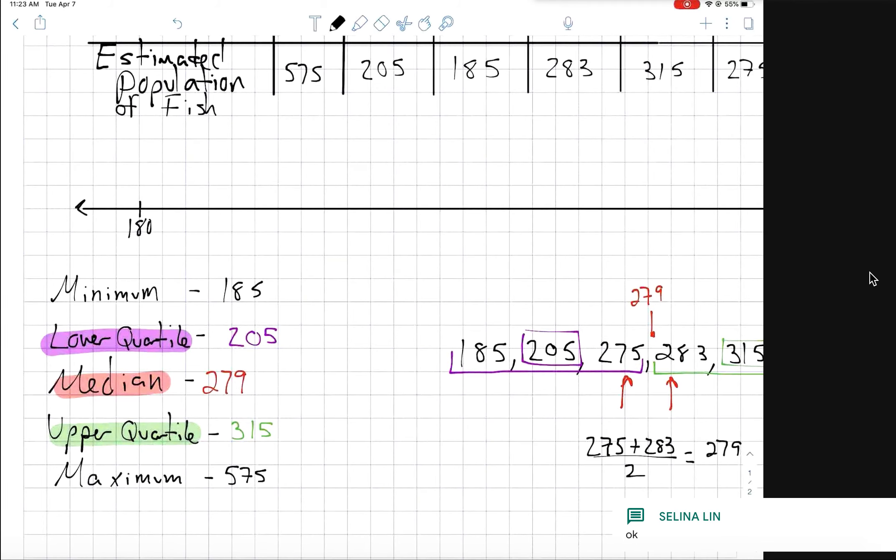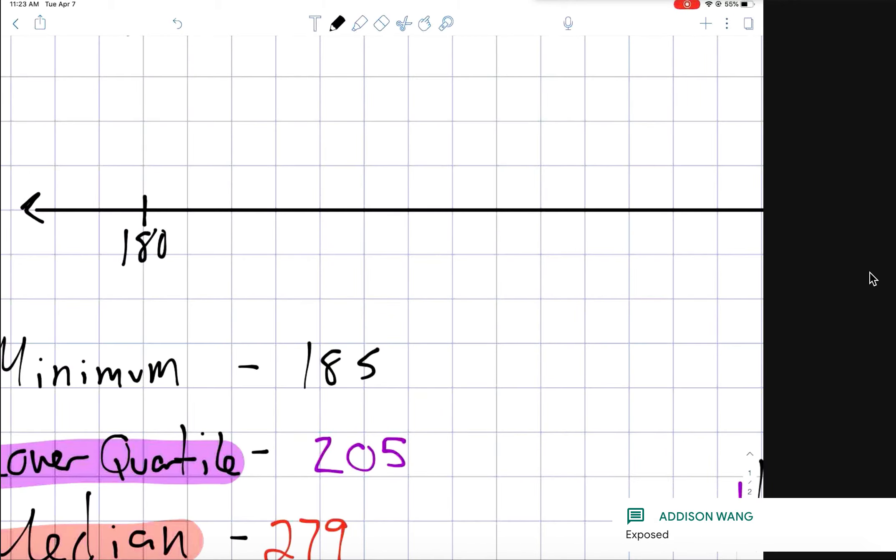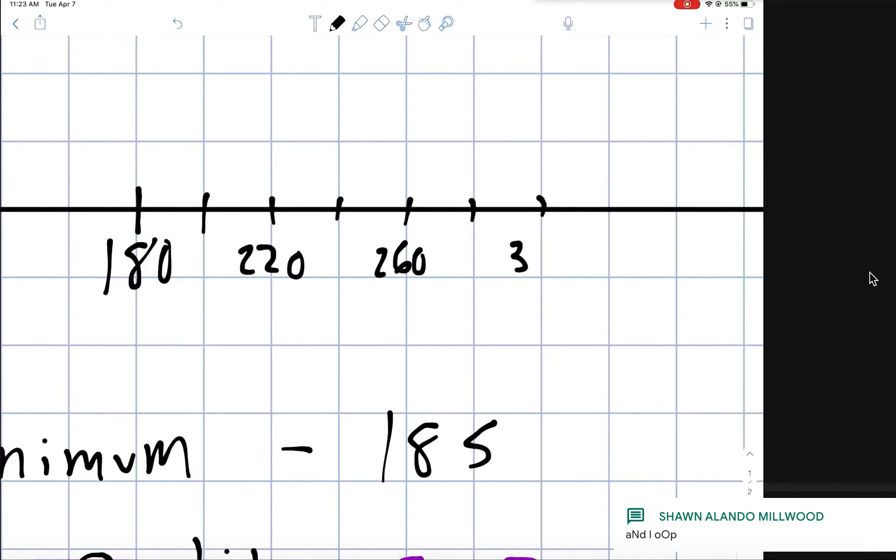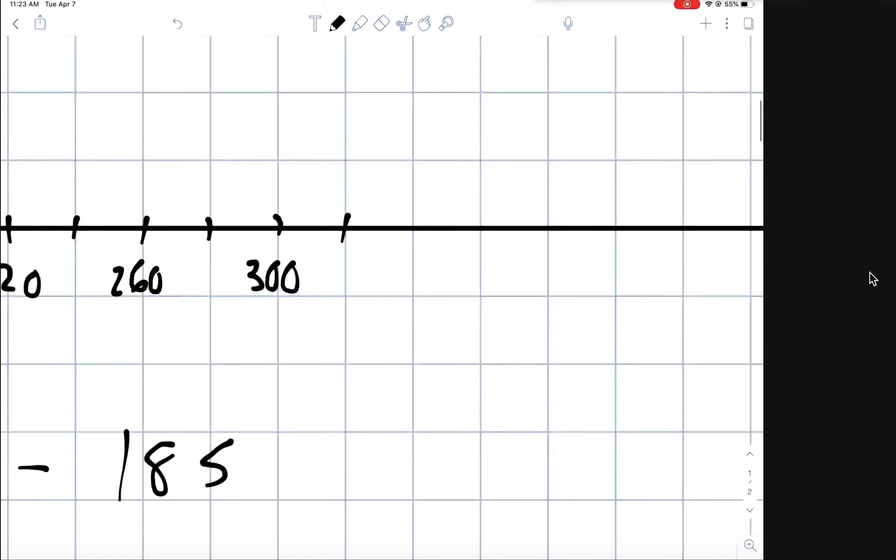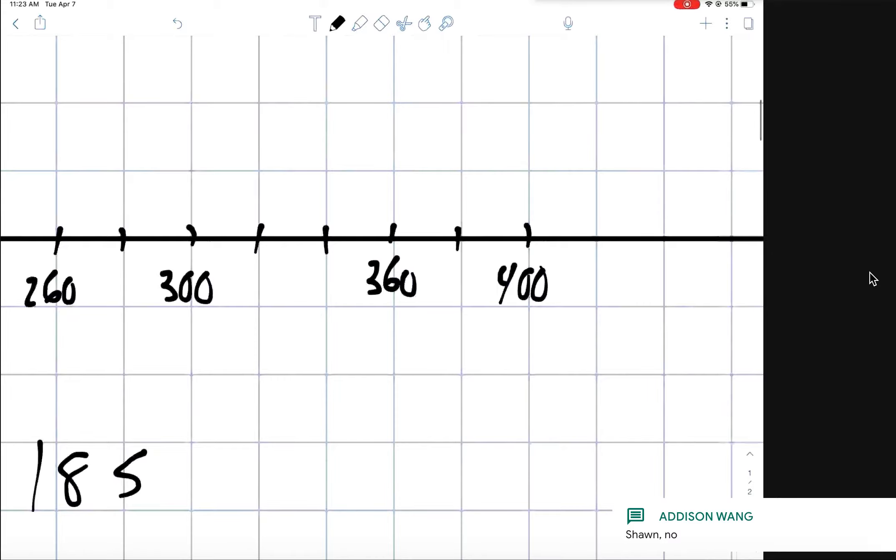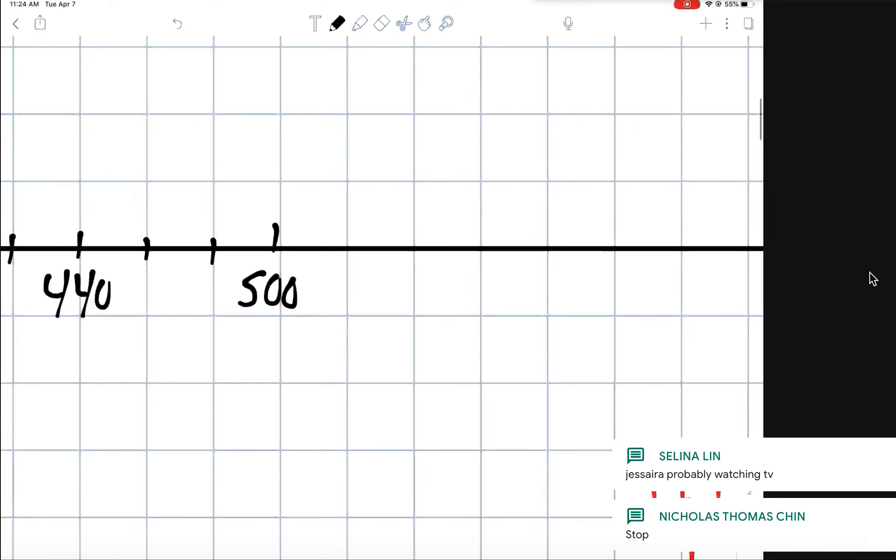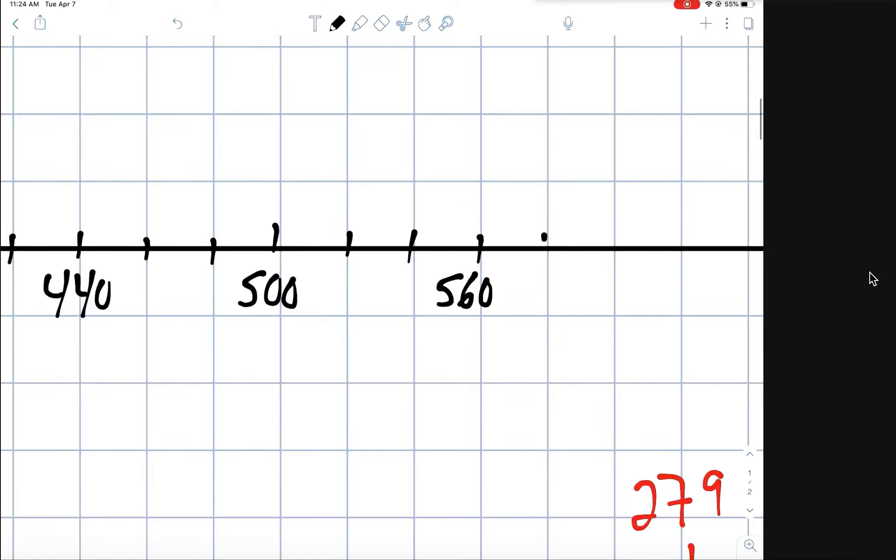Okay, so we're going to count by 20s. 200, 220, 240, 260, 280, 300, 320, 340, 360, 380, 400, 420, 440, 460, 480, 500, 520, 540, 560, 580, 600.